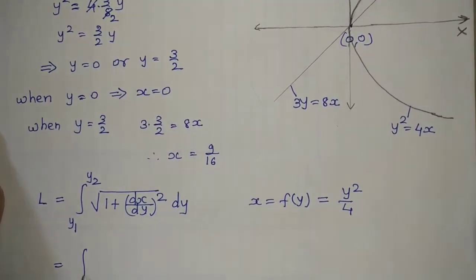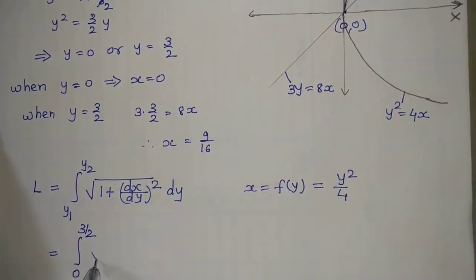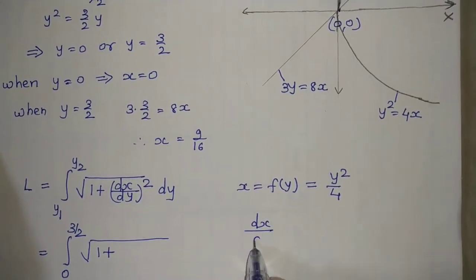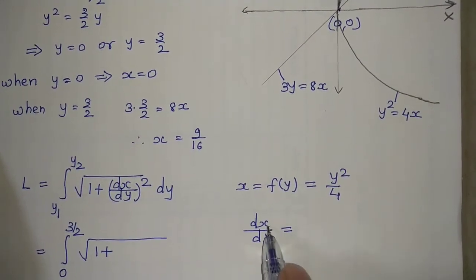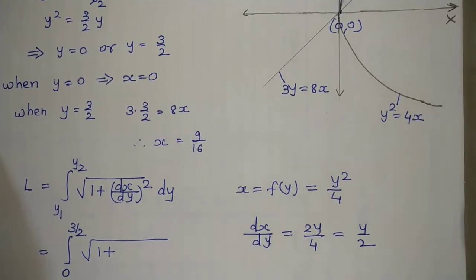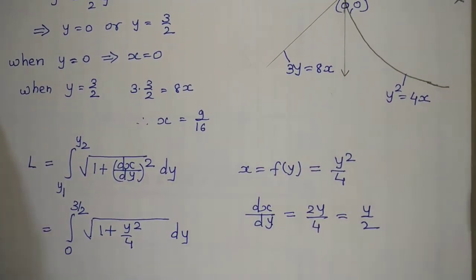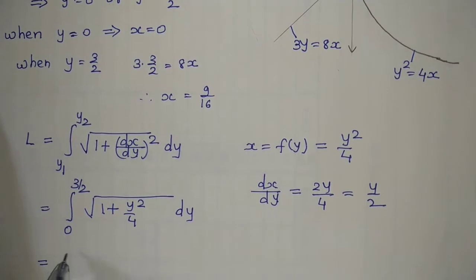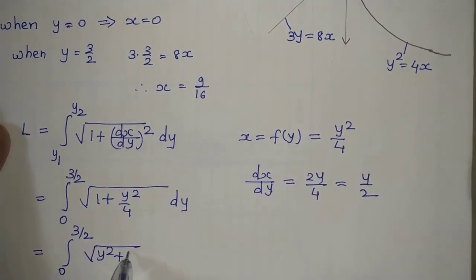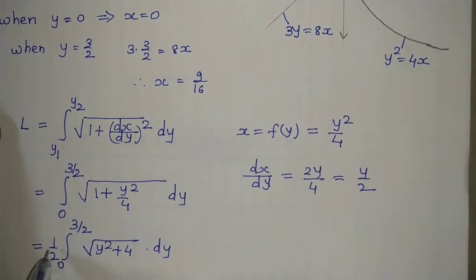The lower limit for y is 0 and the upper limit is 3/2. Now dx/dy = differentiation of y²/4 with respect to y = 2y/4 = y/2. So the integrand becomes √(1 + y²/4) dy, giving L = ∫[0 to 3/2] √(y² + 4) / 2 dy.